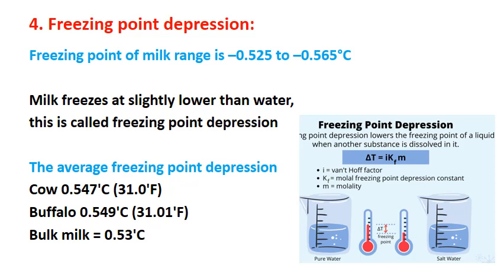The next property is freezing point depression. Milk's freezing point is slightly lower than water — water freezes at 0 degrees Celsius, whereas milk freezes at minus 0.525 to 0.565 degrees. This reduction from zero is called freezing point depression, and it has an important use in detecting adulteration of milk with water. The average freezing point depression for cow milk is 0.547 degrees, buffalo milk is 0.549 degrees, and bulk milk is 0.53 degrees.